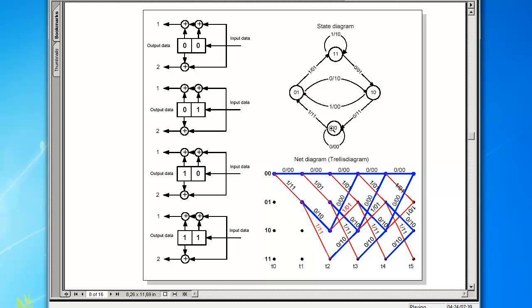A zero or a one may lie at the input of the convolutional encoder, which is why two arrows point away from each state circle. The network diagram is usually called a trellis diagram in literature.